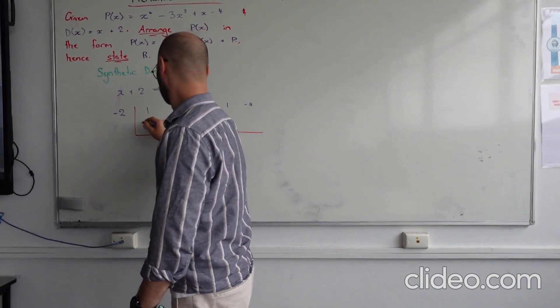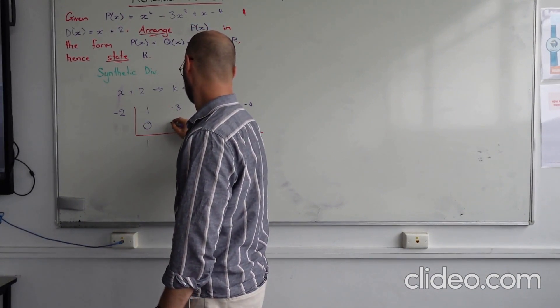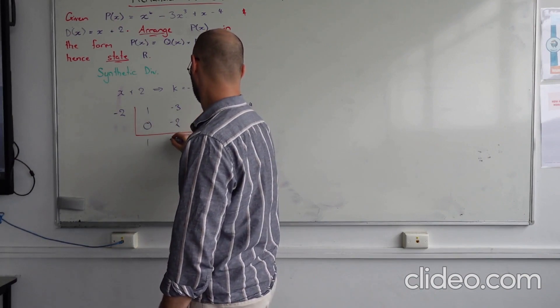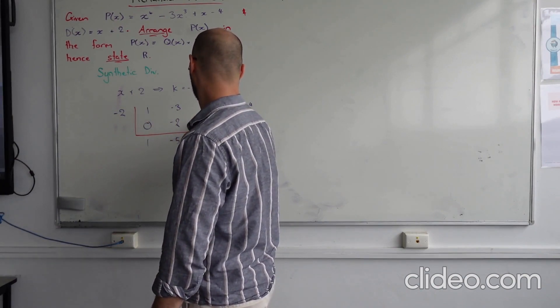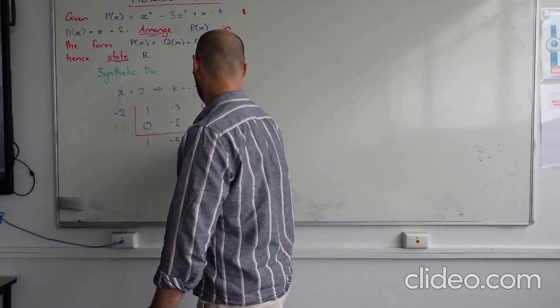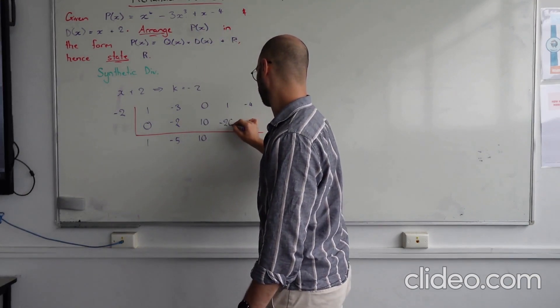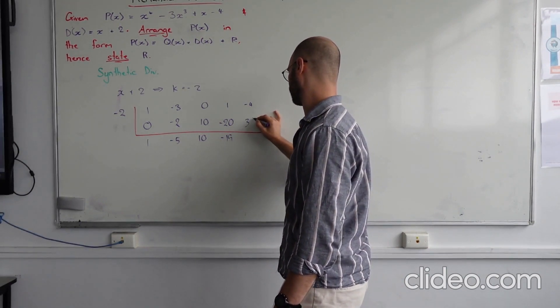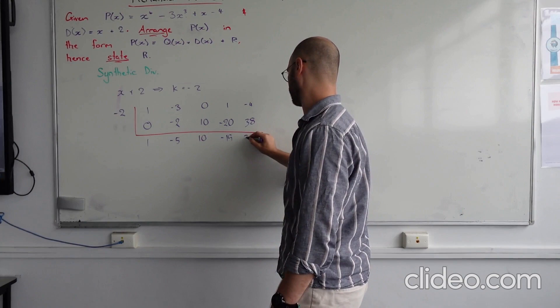Always start with 0. Accumulate 1. Minus 2. So minus 2 times 1. Minus 5. That will be 10. 10. 10. Negative 20. So negative 19. And this will be 38. So this will be 34.